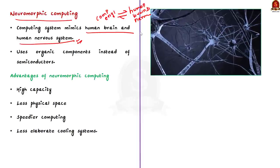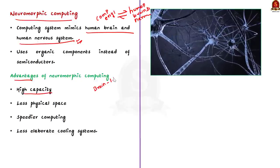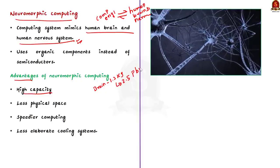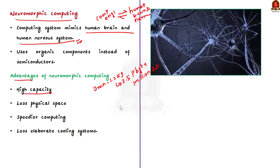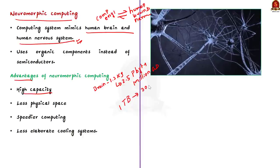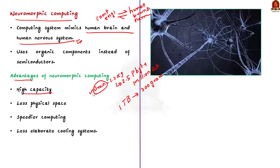Now let's come to the advantages. The first advantage is capacity. Our human brain, which weighs only 1.3 kilograms, can store data up to 2.5 petabytes — that is 2.5 million gigabytes. But in the case of modern computers, even after so much development, the hardware that can store just 1 terabyte of data weighs up to 300 grams. Compared to the memory capacity-to-weight ratio, the human brain and organic systems have a huge advantage.